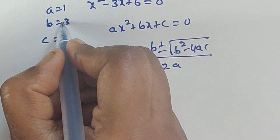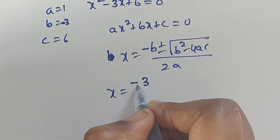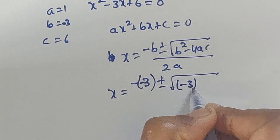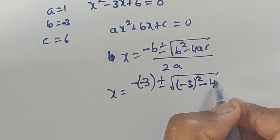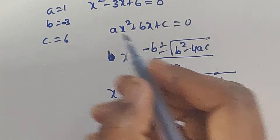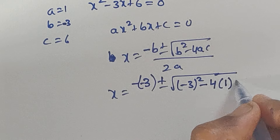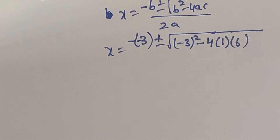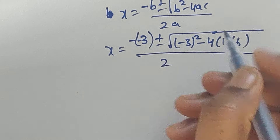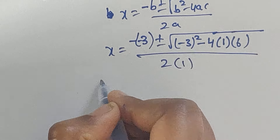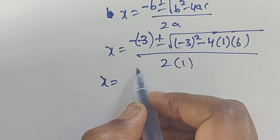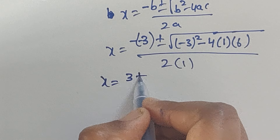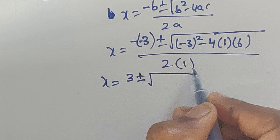So x equals minus b, and b value is minus 3, so minus of minus 3 is plus 3. Plus or minus square root of minus 3 whole squared minus 4 times 1 times 6, divided by 2 times 1.